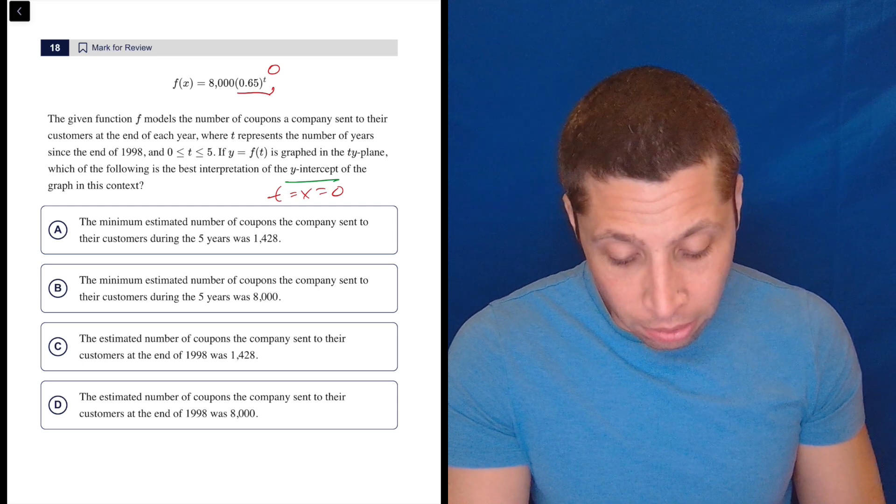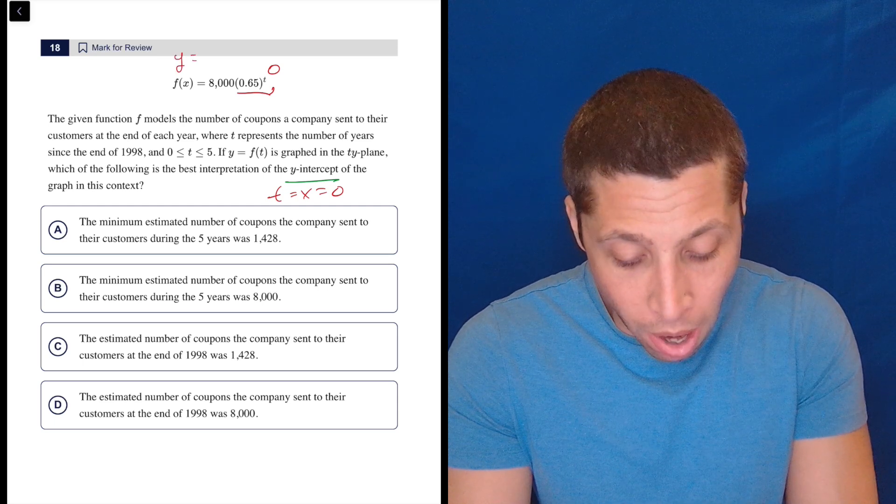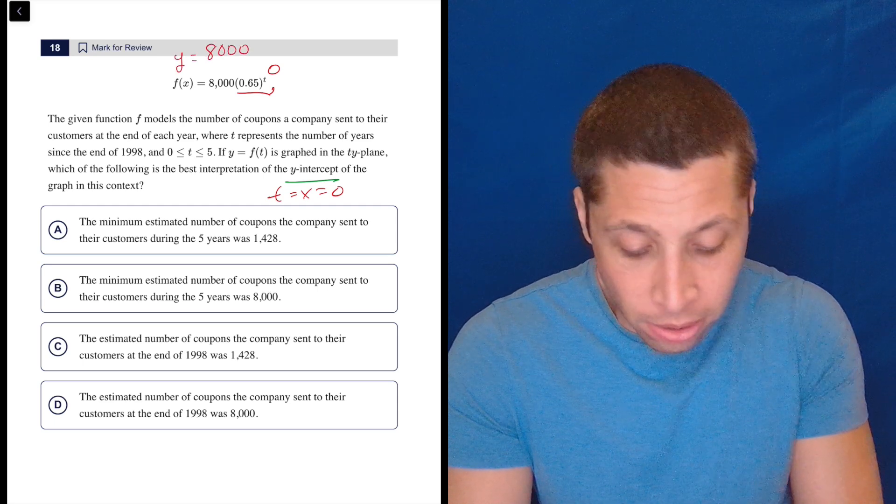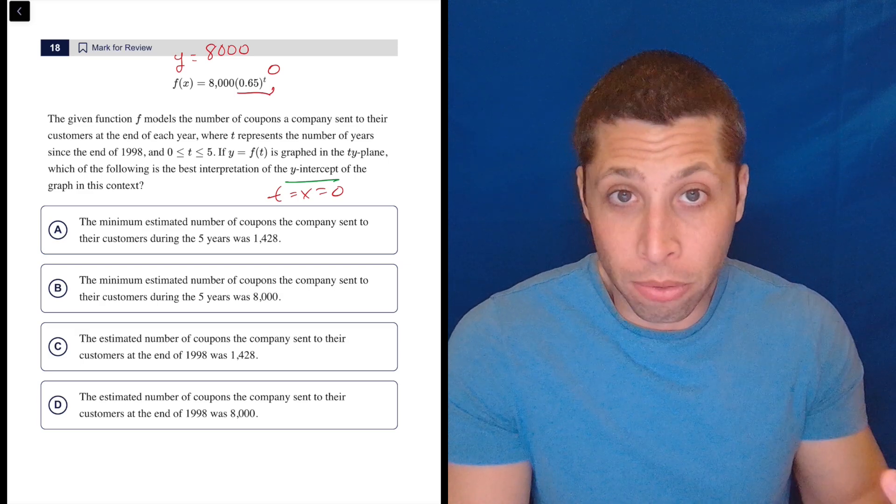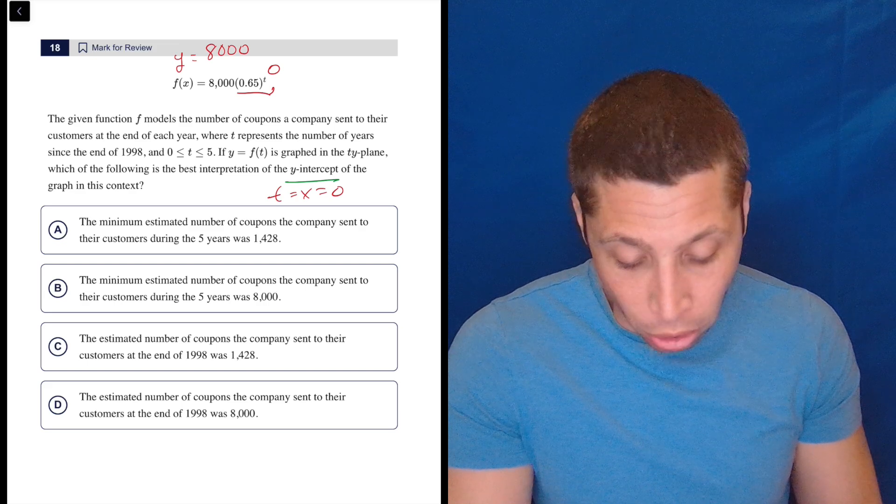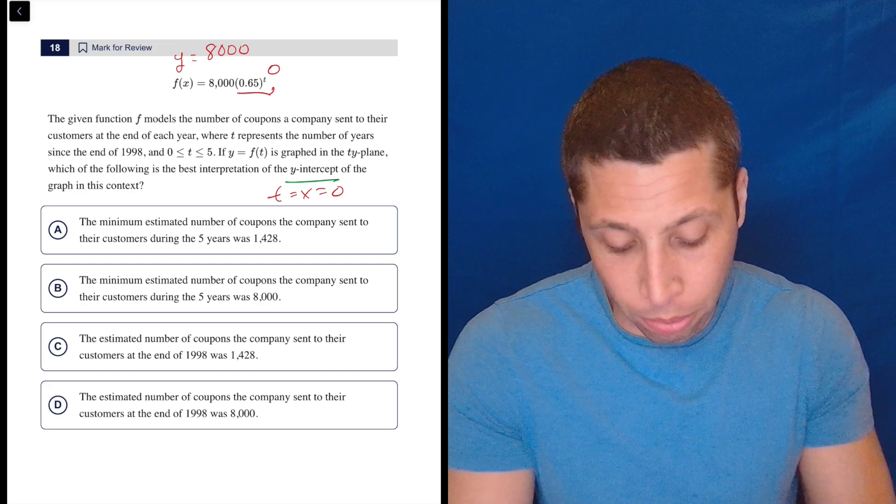So when t is zero, the f of x, the y would be 8,000 times one, which is 8,000. So it's a starting point. That's what most y-intercepts are anyway. It started with 8,000, that's really what I want to know.